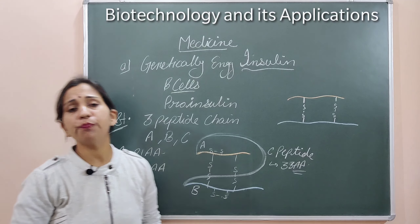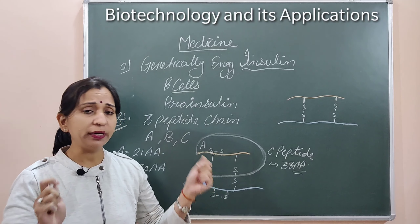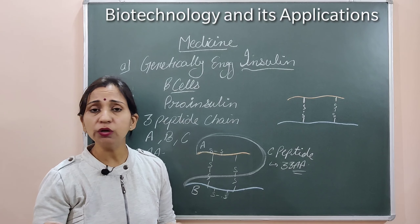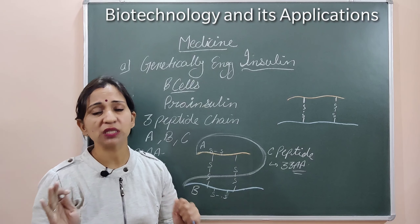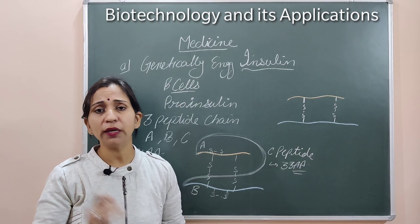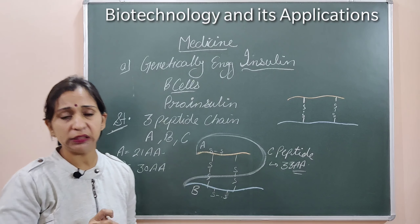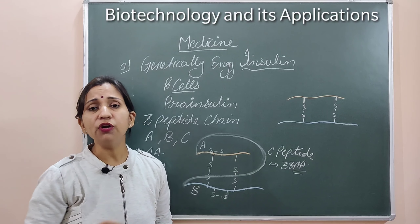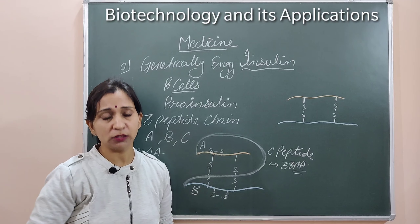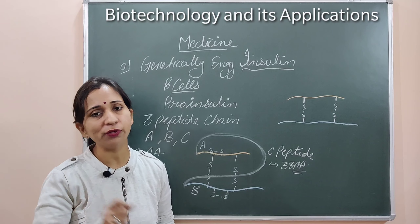Now let's talk about insulin production. For the production of insulin, a diabetic person requires insulin, but the insulin produced by the human body is not always sufficient to meet requirements. So we have alternate options — we can introduce the insulin genes into bacteria and use bacteria as a factory for insulin production.